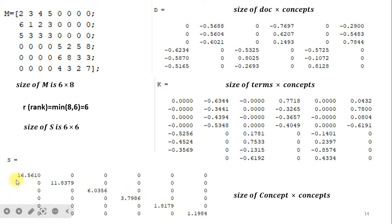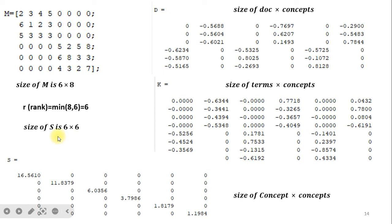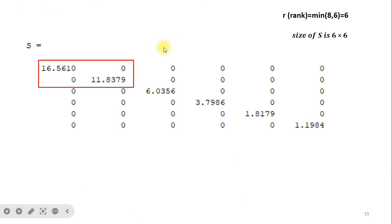Looking at the S matrix, the first concept is dominant, the second is dominant, but after that the values are reduced. We can decide how many concepts to keep — for example, the first 2 or 3 dominant values. Generally we take the dominant values, so here we select only the top 2 singular values. Correspondingly, we take only 2 columns from the K matrix and 2 columns from the D matrix to build the final reduced-dimension matrices.